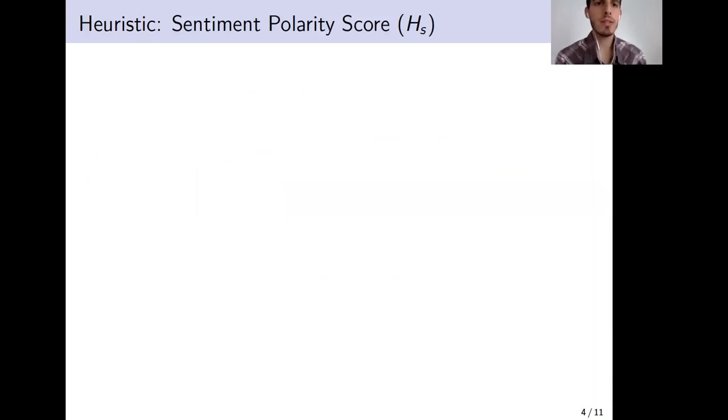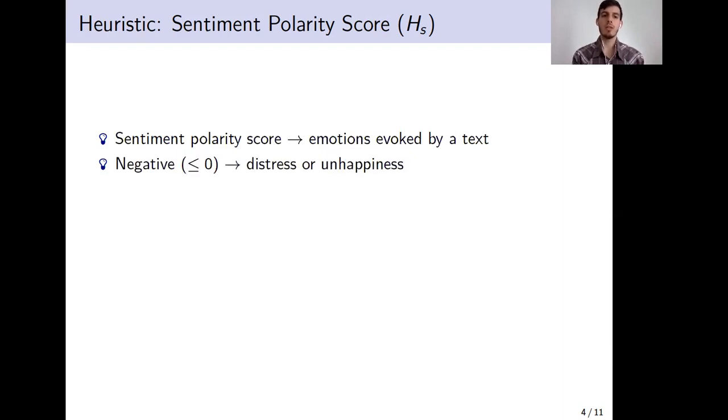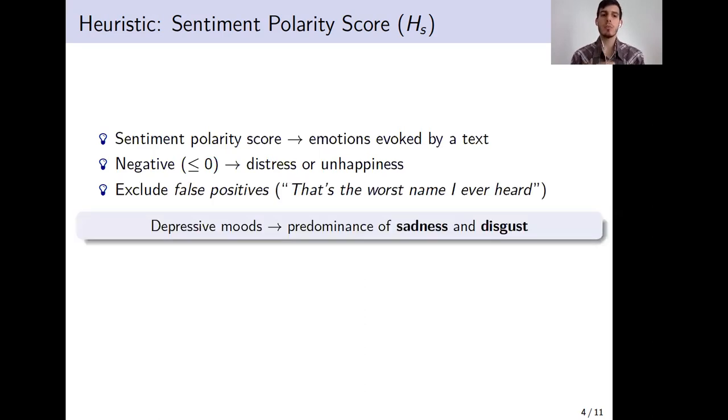The first heuristic is based on the sentiment polarity score, also known as semantic orientation or balance. Research has shown that the sentiment polarity score of a post could be linked with the emotion evoked by that piece of text. Therefore, we hypothesize that when that value is negative, it could be a good indicator of distress or unhappiness, especially when those posts have been written by individuals suffering from depression. It's also important to exclude from this set the false positive or noisy posts. For instance, 'that's the worst name I ever heard' is also a piece of text with a negative polarity score.